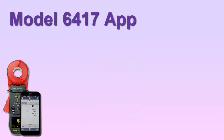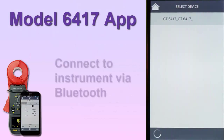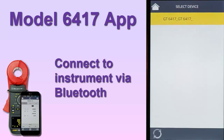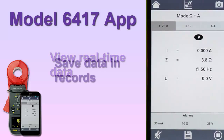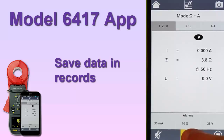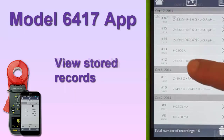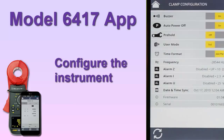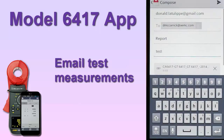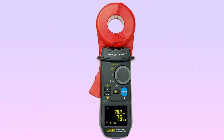The Ground Tester 6417 app enables users to connect to a Model 6417 via Bluetooth. Once connected, you can view data currently being measured by the instrument in real-time, save measurement data in a record on the instrument, view previously stored data records, change configuration settings on the instrument, and email test results. To use the app to connect to a Model 6417, Bluetooth must be enabled on the instrument.